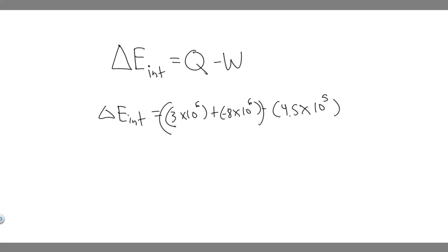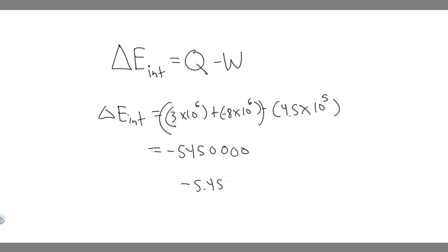Go ahead and take out your calculator. It's 3 times 10 to the 6, minus 8 times 10 to the 6, minus 4.5 times 10 to the 5. When you compute this, it equals minus 5,450,000, or minus 5.45 times 10 to the 6.